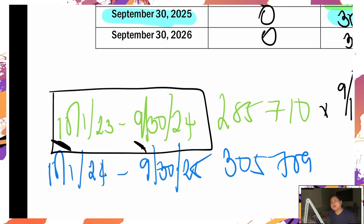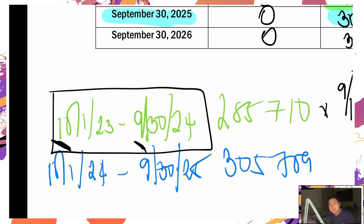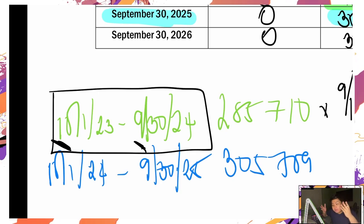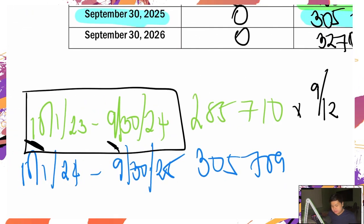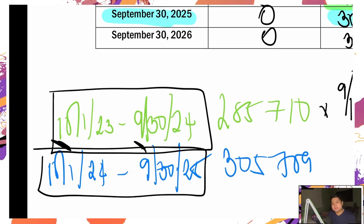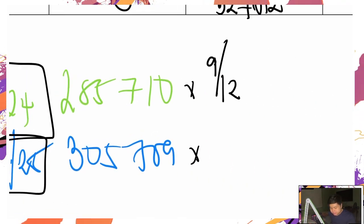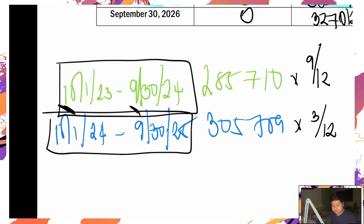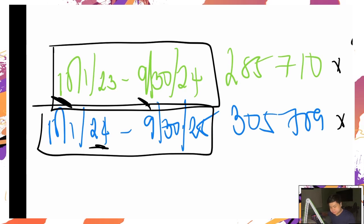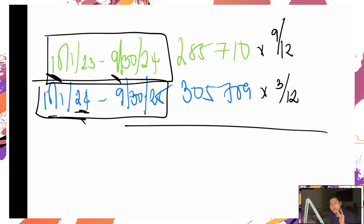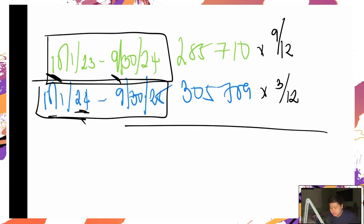You gotta remember na hindi yan lahat sakop ng 2024 lang o lahat sakop ng 2023 lang, so kailangan natin siyang himayin. Out of those 12 months, ilan doon yung pasok sa calendar year 2024? Nine months — kasi yung January hanggang September 30, pasok. At yung isa — October 2024 hanggang September 2025 — three months lang ang pasok sa 2024: October, November, December.